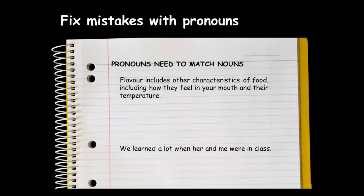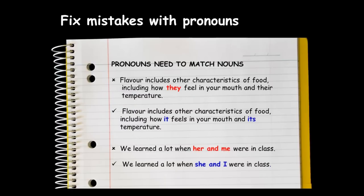A third common problem with sentences is not using pronouns that match the nouns they replace. Here are two example sentences — can you spot the mistakes? In the first example, the noun being replaced is 'food', so we need to write 'it' and 'its'. In the second example, we need to use 'subjects', so we need to use 'she' and 'I'.